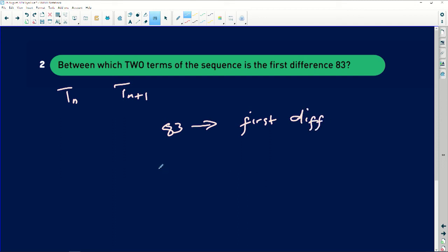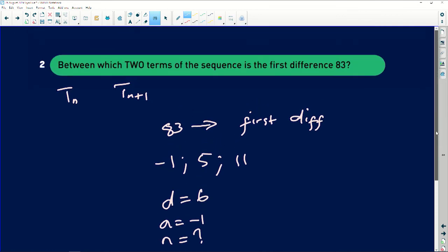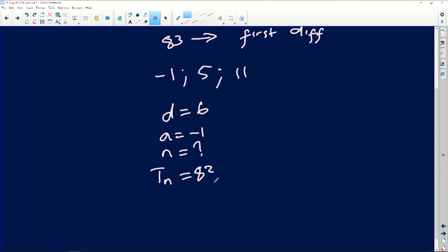And remember the first differences were -1, 5, and 11. So it means I have the constant difference as 6, and then I have a as equals to -1. I need to find what n is, and also I have Tₙ as equals to—let me have a look at it quickly—83. So I have this as 83. Now I'll say Tₙ is equals to a plus (n - 1) multiplied by d.